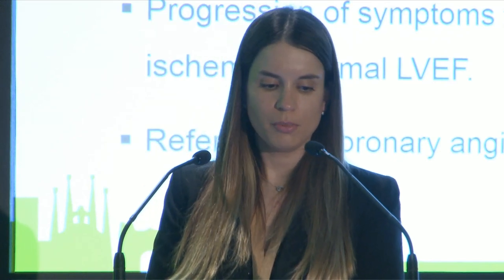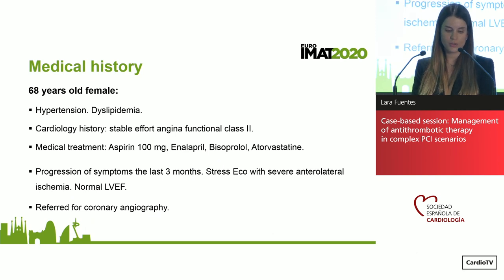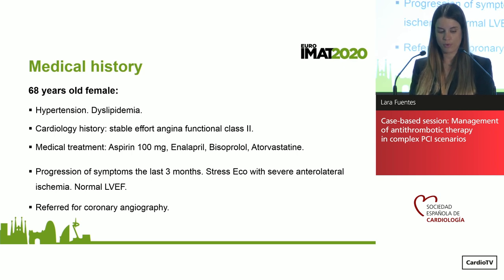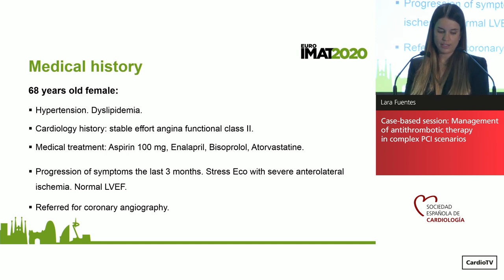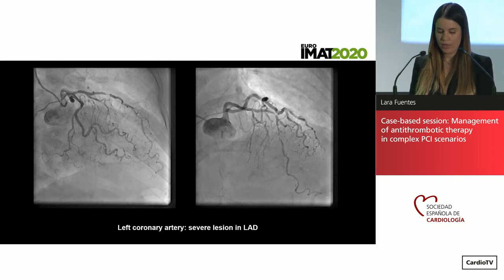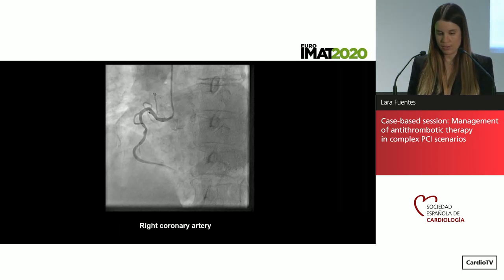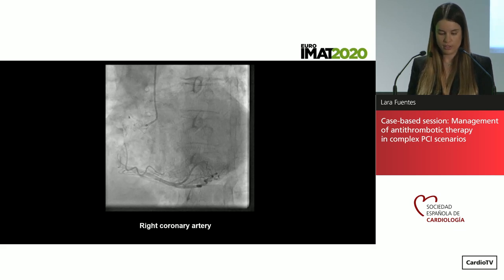The second case is a 68-year-old female with hypertension and dyslipidemia. She has stable effort angina functional class 2, initially treated medically with aspirin, ivabradine, bisoprolol, and atorvastatin. Over the last three months the patient has progression of symptoms, and an echo stress test shows severe anterolateral ischemia with normal ejection fraction. The patient is referred for coronary angiography. The left coronary artery shows a severe long lesion in the mid-LAD, and the right coronary artery has no significant lesion.